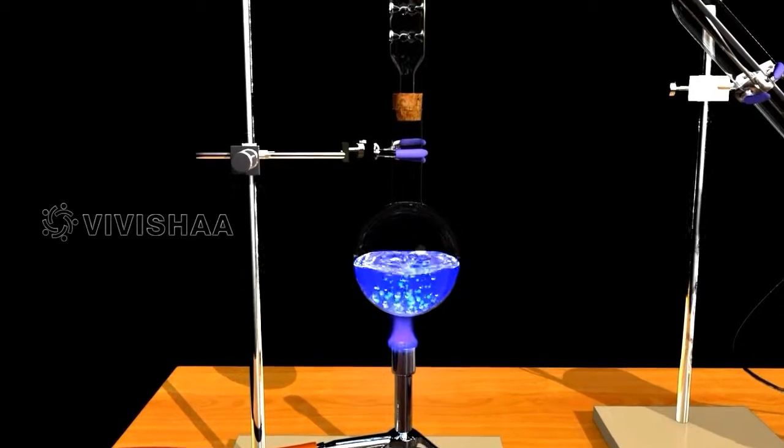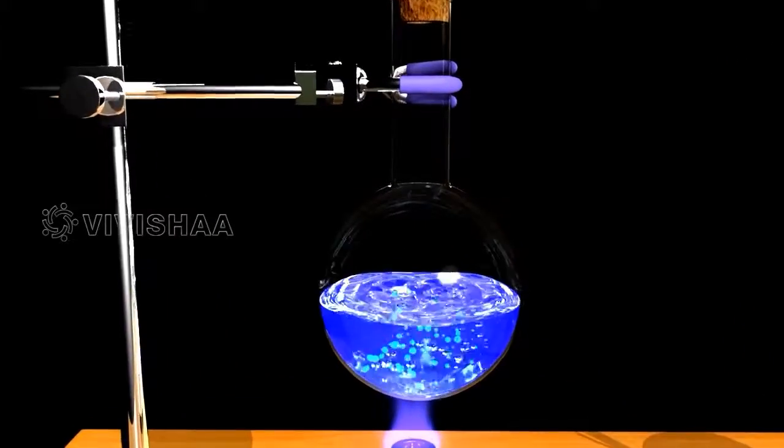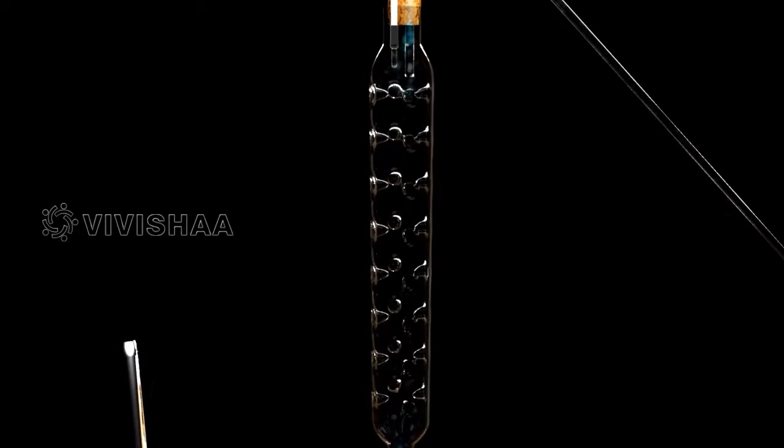A fractional distillation unit consists of a round-bottomed distillation flask and a fractioning column packed with glass beads. The glass beads provide extra surface for vapors to cool and condense continuously.